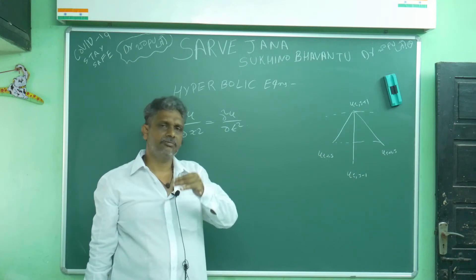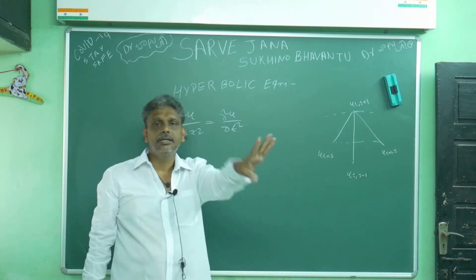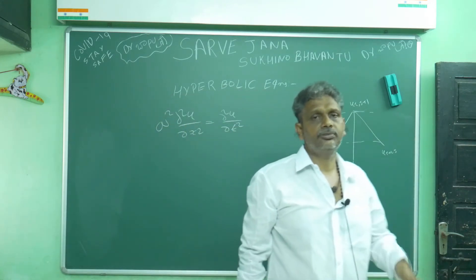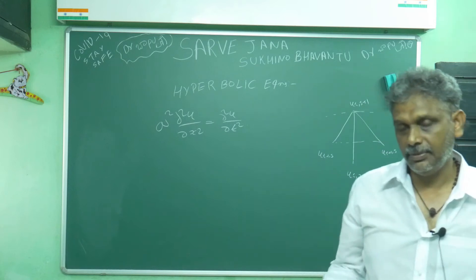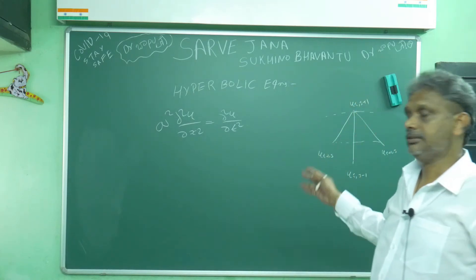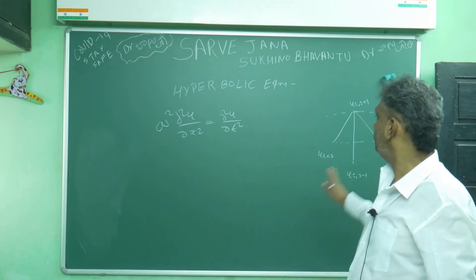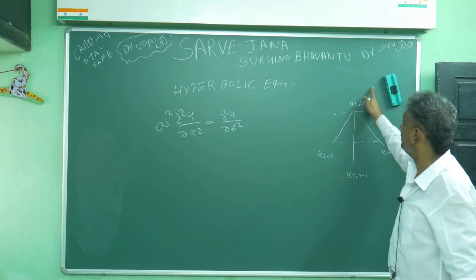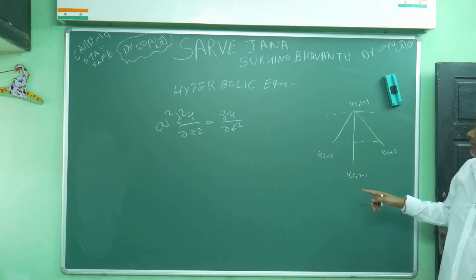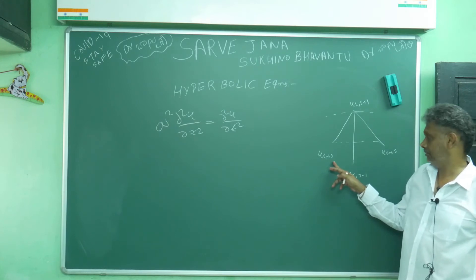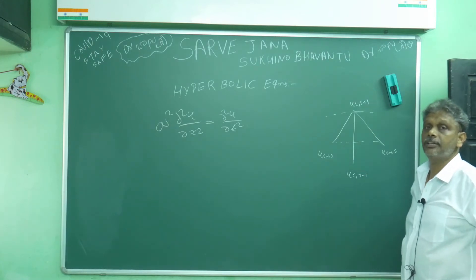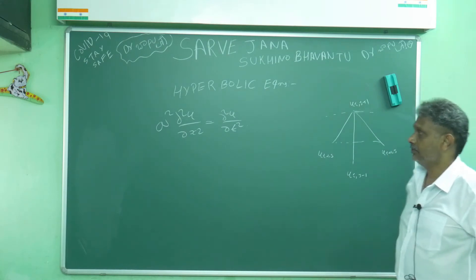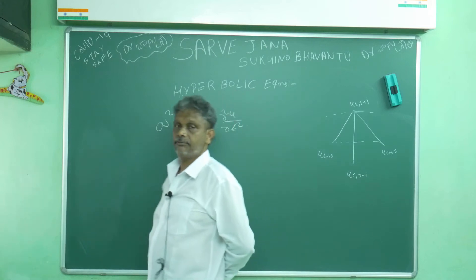Don't worry whether you learn or not — just remember the formula and attack the problem. For hyperbolic equations, to find the j plus one position unknown, I need the j-th position known terms and the j minus one position known terms.